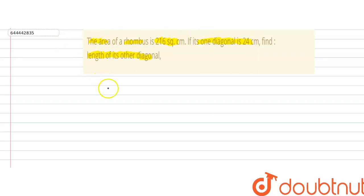We know that area of the rhombus is given by: Area of rhombus = 1/2 × d1 × d2.